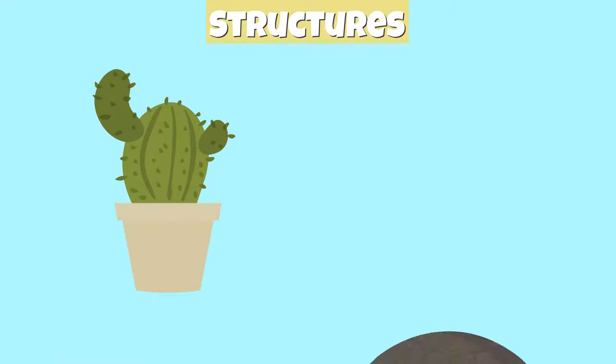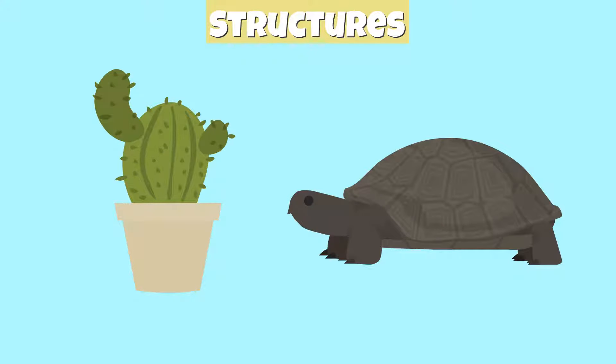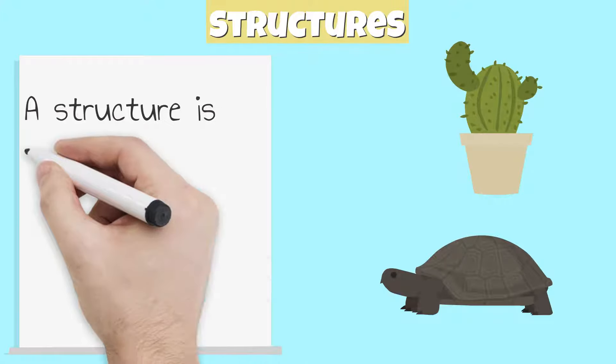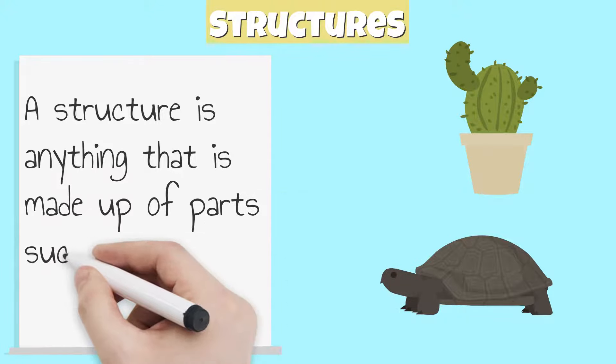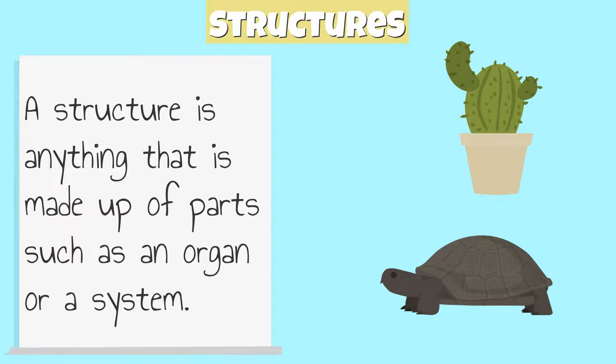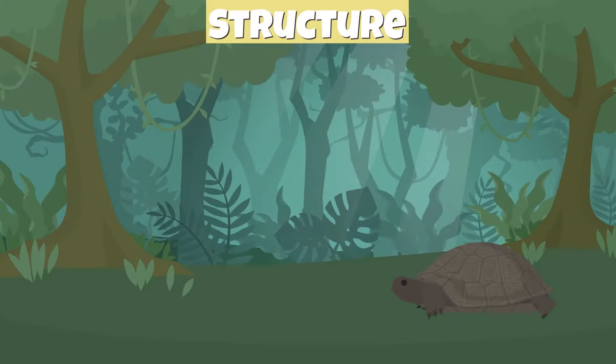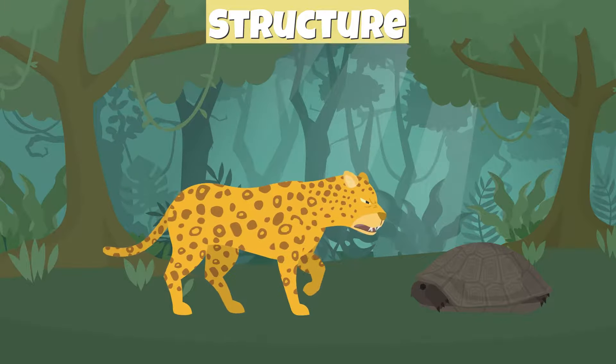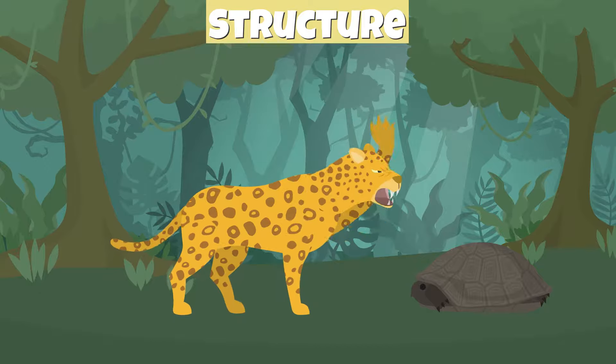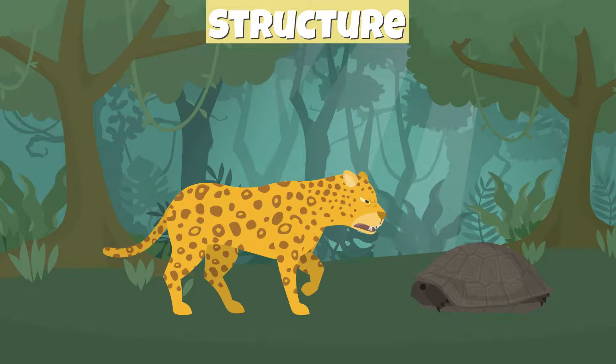Both plants and animals have structures that help them stay alive. A structure is anything that is made up of parts, such as an organ or a system. Each structure has a specific function, which is what the structure does, how it works, and how through the process of natural selection, an organism has evolved and adapted to survive.